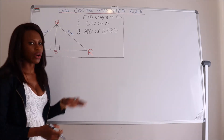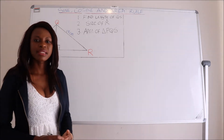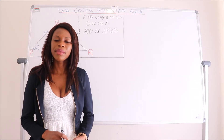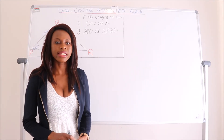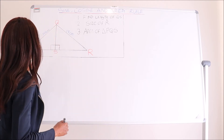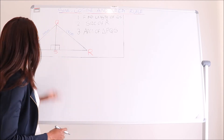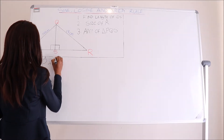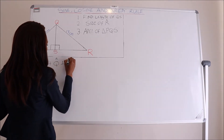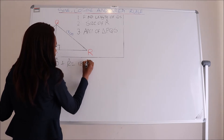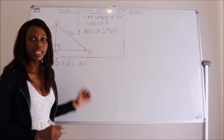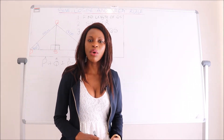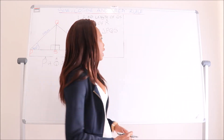We don't have angle Q and we don't have angle R yet. Another important rule to remember is that the sum of angles of a triangle must always equal 180 degrees. That means the angle of P plus the angle of Q plus the angle of R must always give 180 degrees. This is the rule that angles of a triangle must always be equal to 180 degrees.